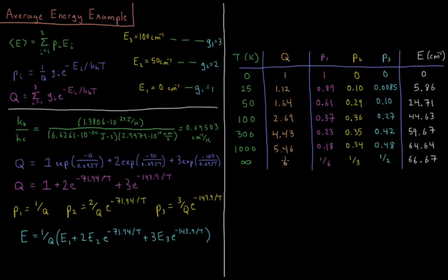And that continues all the way up until T equals infinity, where we're approaching a partition function of 6, and all states are equally likely. So the probability is just proportional to the degeneracy of each level. So we have 1 6th, 2 6ths or 1 3rd, and 3 6ths or 1 half for the probabilities, giving us a final energy of 67 wavenumbers above E2, and 1 3rd of the way up to E3.